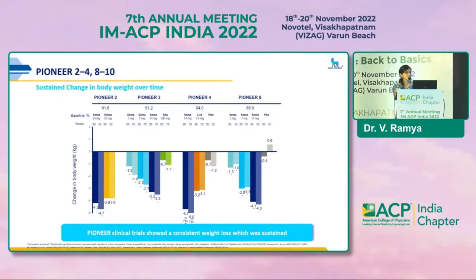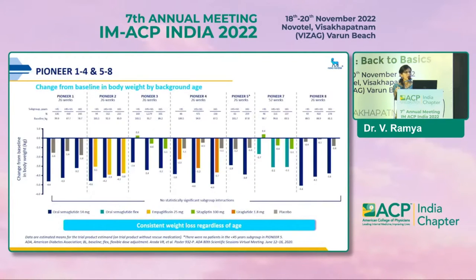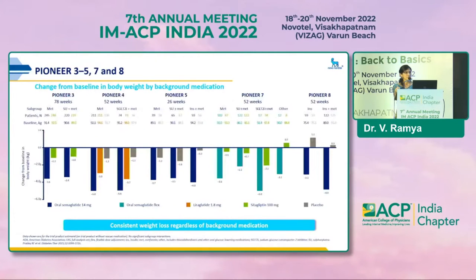The change in body weight is sustained over time — up to 1 to 2 years. Age is another important factor: in the series of trials, patients were divided into three groups based on age — less than 45, 45 to 65, and more than 65. Irrespective of age, there is a consistent weight loss in all age groups. Similarly, even if the patient is on other background medications like metformin, sulfonylurea, or SGLT2 inhibitors, there is consistent weight loss regardless of background medication.